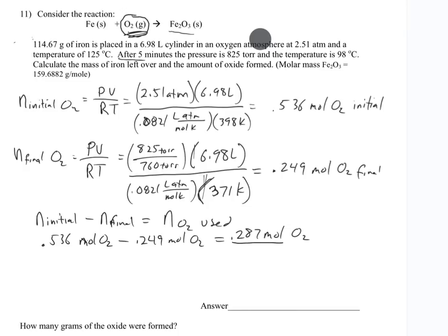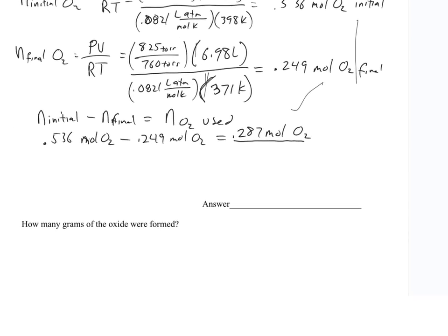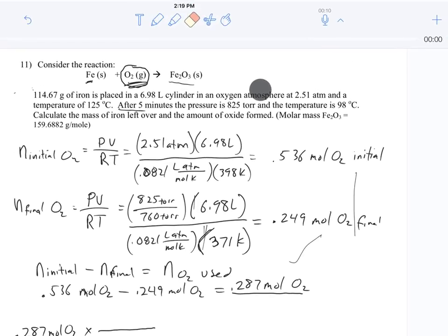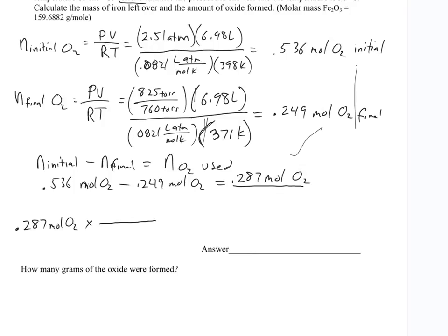Now what I'm going to do is start with my 0.287 moles of O2. I'm already in moles, and I'm going to go back up here to my equation, which I didn't balance, so I want to balance my equation. If I balance it, I see I've got four moles of iron and three moles of O2 gives us two moles of Fe2O3. So now I have my mole ratio, which is four moles of iron to three moles of oxygen.